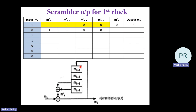All shift register values are initially zero. For the first clock, mk-minus-3 is zero and mk-minus-4 is zero, so their XOR gives zero. This is mk-double-dash. Then mk-double-dash XOR mk gives the scrambled output mk-dash. Since the first input bit is one, zero XOR one equals one — so the first scrambled bit is one.